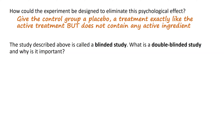When a control group is given a placebo, that is called a blinded study — the control group individuals don't know whether they're getting the active ingredient or not. They've agreed to participate but don't know which group they're in.